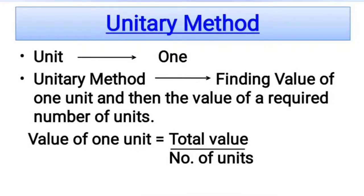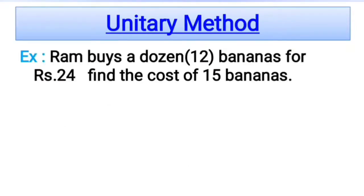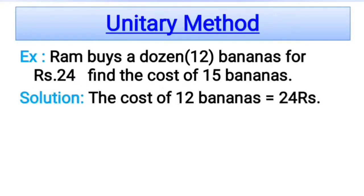Now let me explain unitary method with the help of an example. Ram buys a dozen bananas for Rs.24, that is 12 bananas for Rs.24. Find out the cost of 15 bananas. Using unitary method, we have to find out the cost of 1 banana. The cost of 12 bananas equals Rs.24.